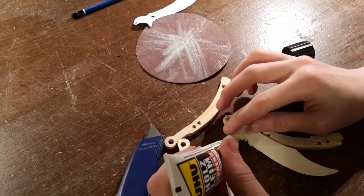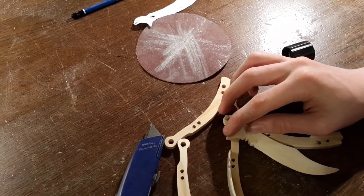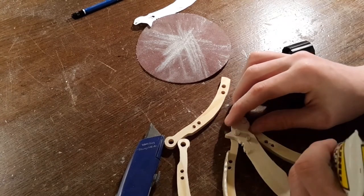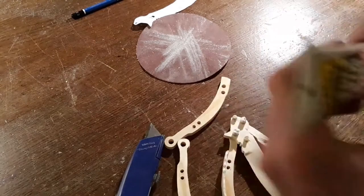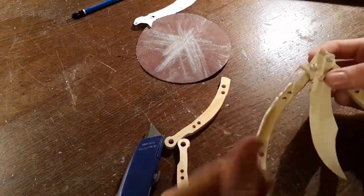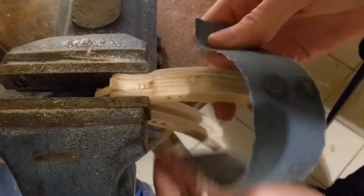Now glue the second handle piece on. Finally round off the handle using sandpaper.